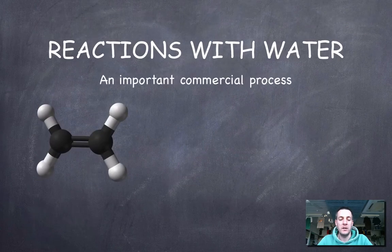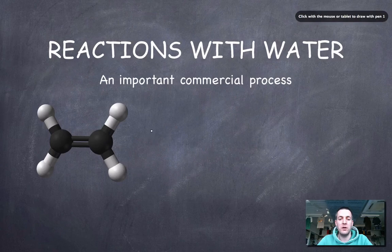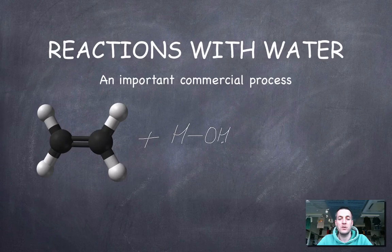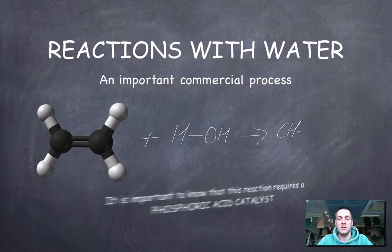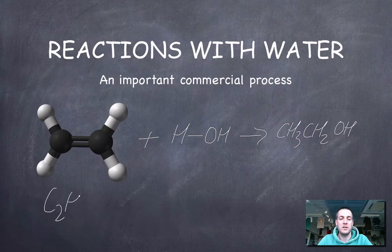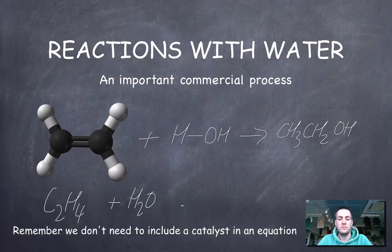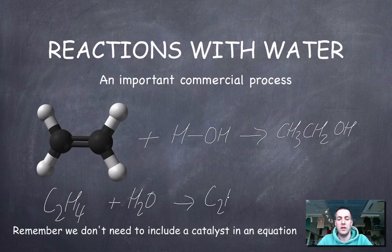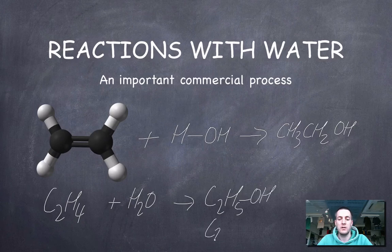And finally, reactions with water. Well, if you think you know how HX works, then water shouldn't be too difficult because you've just got HOH. So your X is OH. So you're just going to be making that into CH3CH2OH. And if you're writing an equation for that, then that would be C2H4 plus H2O makes C2H5OH. Or you could just write that as C2H6O, whatever you like.